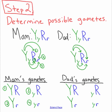Step two is to determine the possible gametes. Remember, gametes are sperm and egg. What we have to do is, given mom's genotype, figure out all the possible combinations for her sex cells — all the different allele combinations. Essentially what you're doing here is foiling. You need to have one Y and one R in each combination.